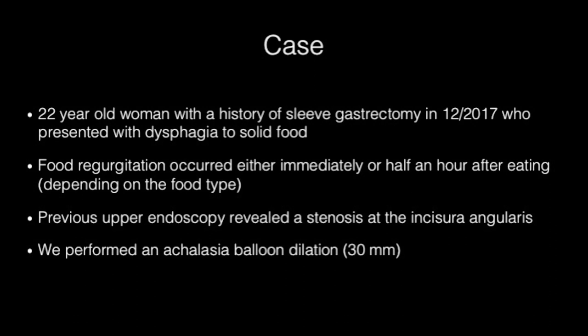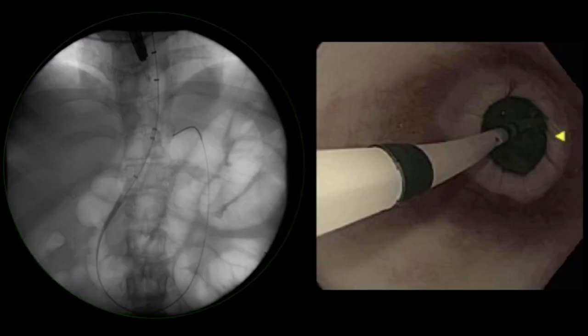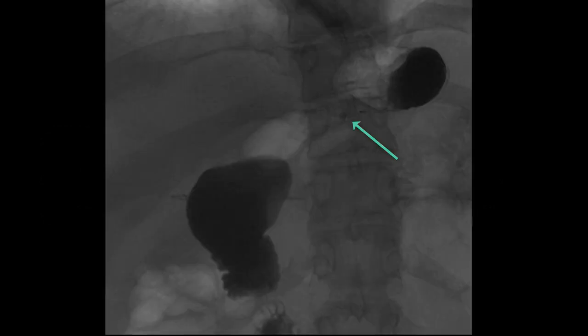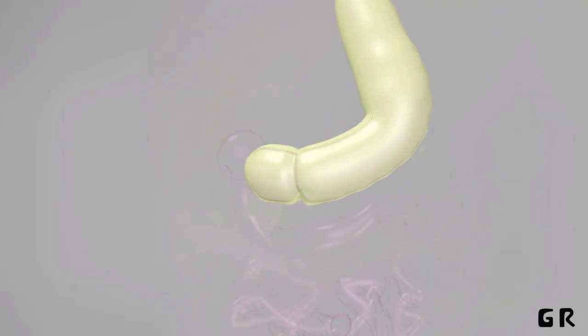We performed an Achalasia Balloon Dilation. Unfortunately, the patient did not respond. The Achalasia Balloon was too long for her 80 cm sleeve. The patient then had an upper GI series test and the arrow showed the level of the stenosis.